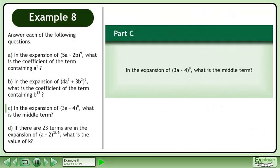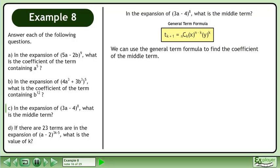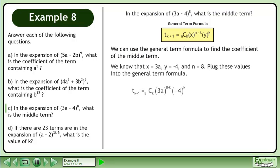Now we'll move on to part c. In the expansion of (3a - 4) raised to the power of 8, what is the middle term? We can use the general term formula to find the coefficient of the middle term. We know that x equals 3a, y equals negative 4, and n equals 8. Plug these values into the general term formula.